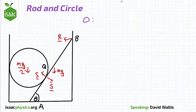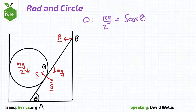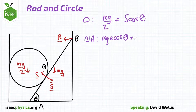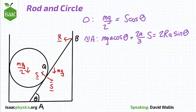As usual, we now resolve forces and take moments. Balancing forces on the circle vertically gives mg over 2 equals S cos theta. Taking moments about A gives mga cos theta plus 2aS over 3 equals 2Ra sin theta. These can be solved to find R.